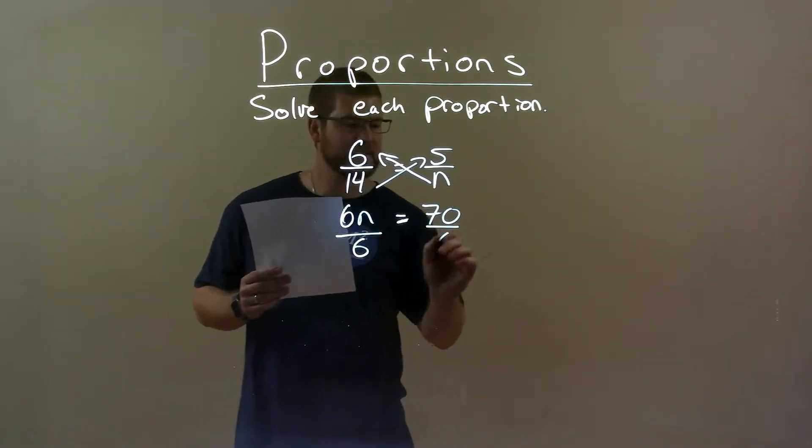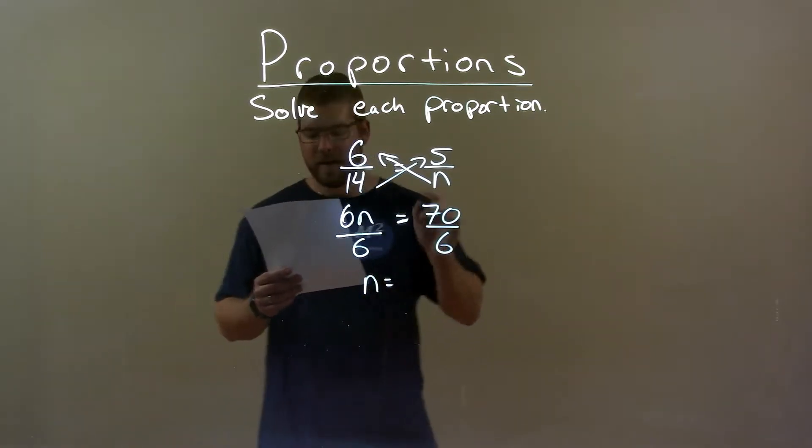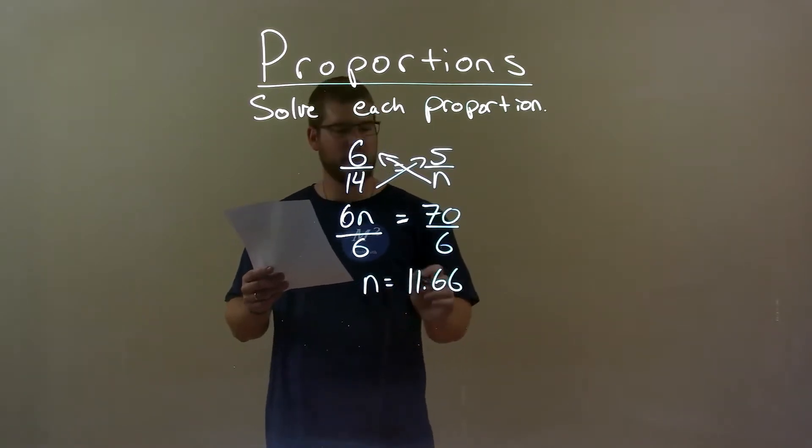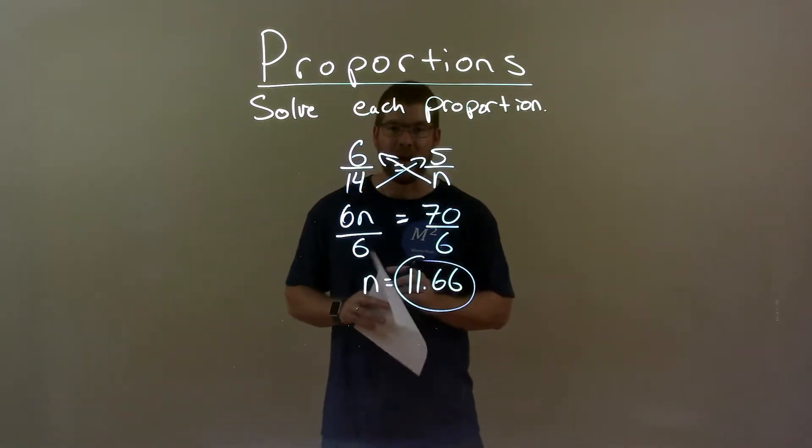I divide both sides by 6. n is by itself and 70 divided by 6 is 11.66. Don't really worry about the rounding here and that is our final answer.